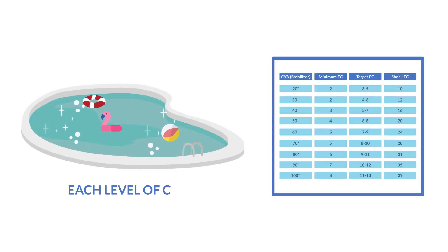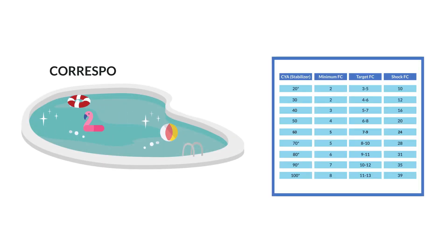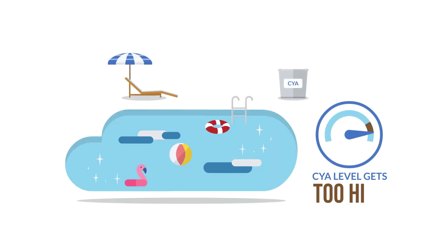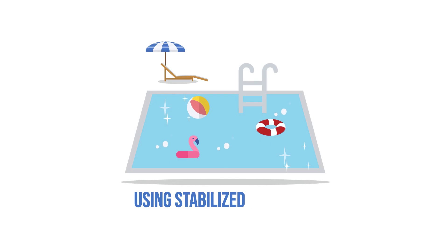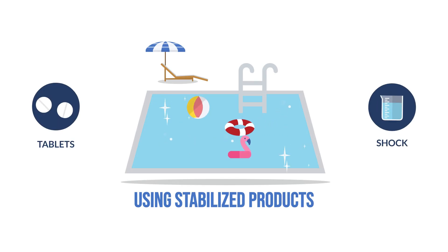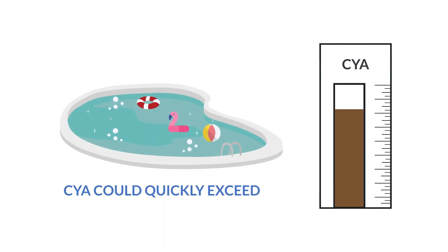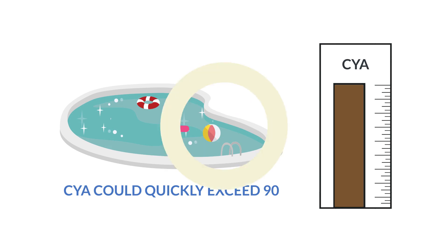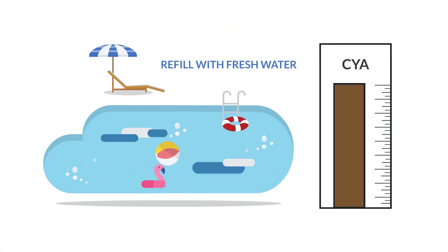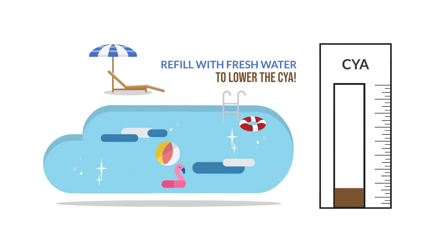At each level of CYA, a corresponding level of chlorine is needed. If your CYA level gets too high — perhaps from using stabilized products like tablets or shock — your CYA could quickly exceed 90. If that happens, we recommend a partial drain and refill with fresh water to lower the CYA.